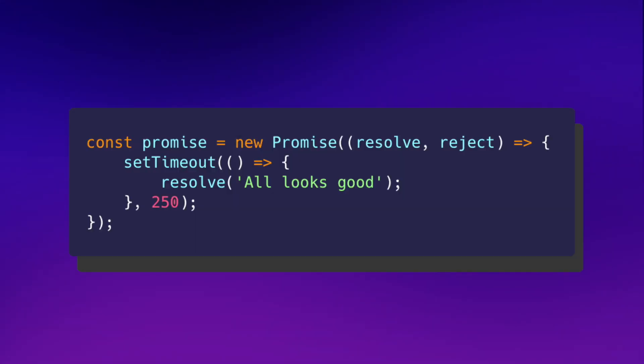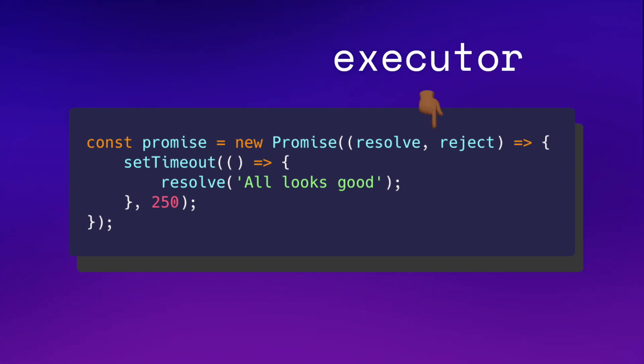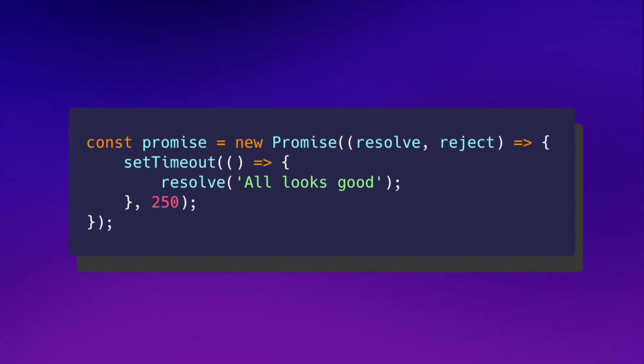To make this a little more clear, let's create our own promise. To create a new promise, we use the class constructor syntax. The only parameter the constructor takes in is a callback function, typically called executor. Executor gets called right when you create that promise. This callback function takes in two parameters, which are also callback functions called resolve and reject. Inside the executor callback you can define whatever logic makes sense to live inside of a promise, and remember that it gets executed right when you create that promise.